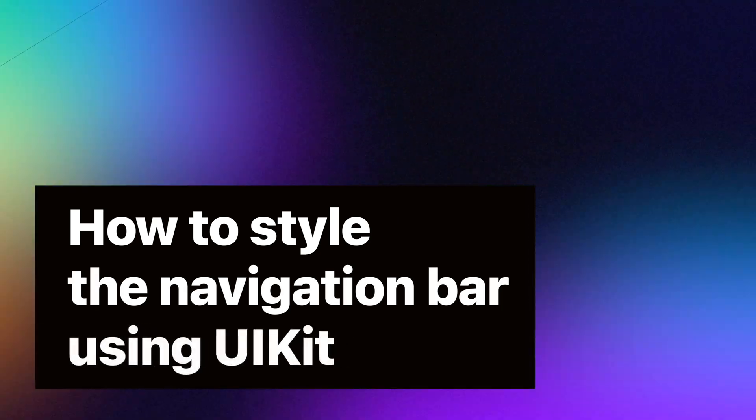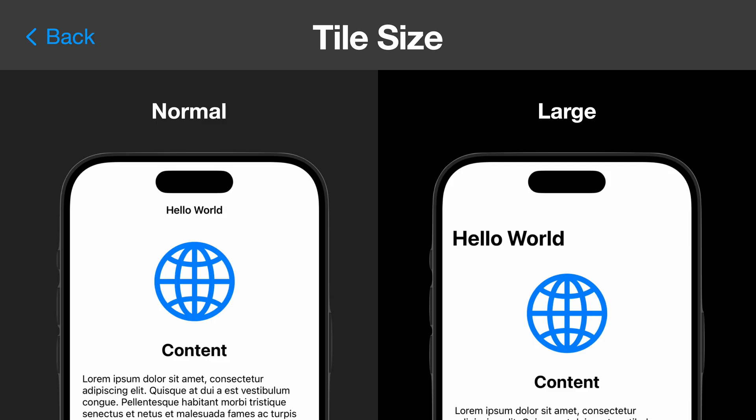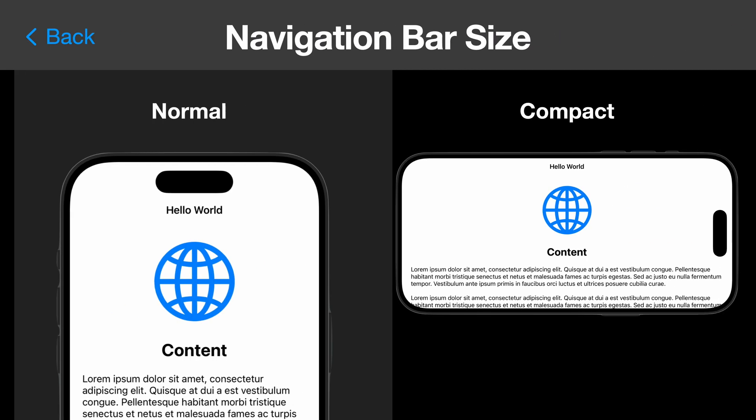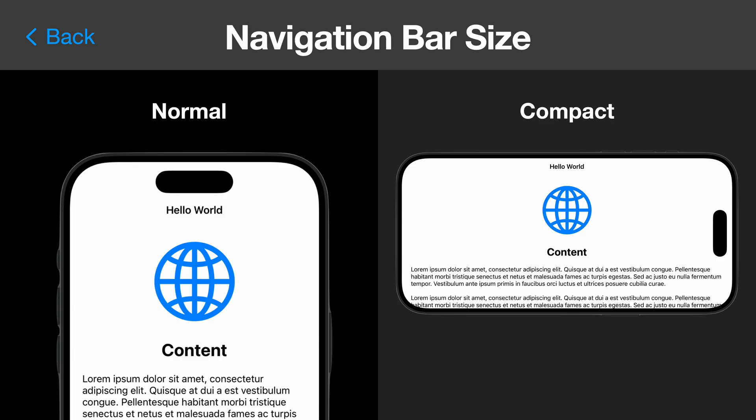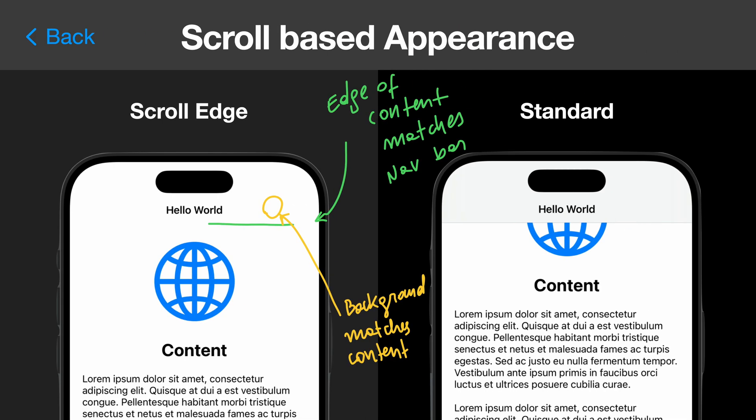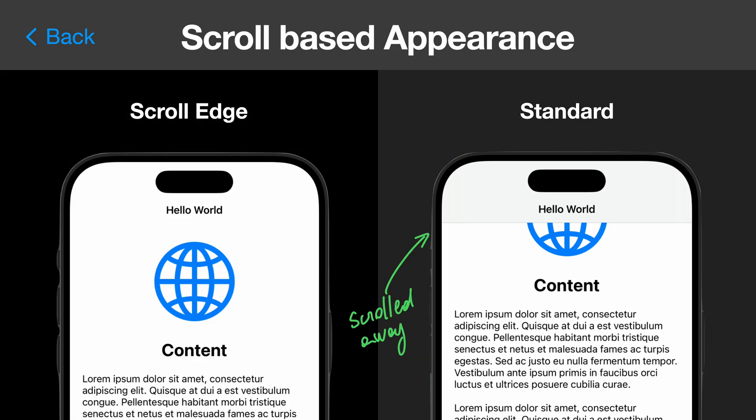With those concepts clear, let's look at how to style the navigation bar using UIKit. First, we need to understand some variations on how a navigation bar can be rendered. Are we using large titles or not? Is the size normal or compact? The compact size can be seen on iPhone when rotating to landscape. What about the scroll state? We have the scroll edge state and the standard state. The scroll edge state essentially means the scrollable content underneath is in the initial position, so the top edge of the scrollable content aligns with the bottom of the navigation bar. If this is not the case — as we start scrolling down — we would see the standard appearance.